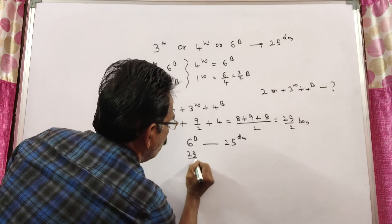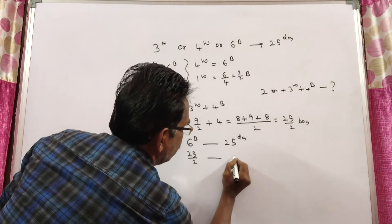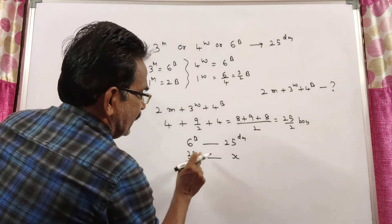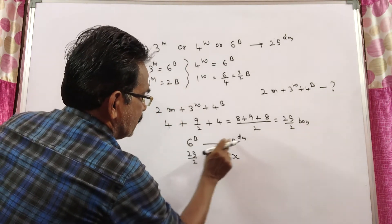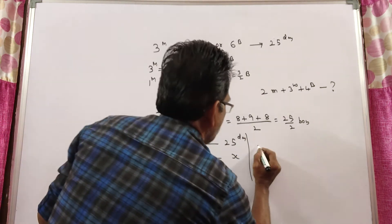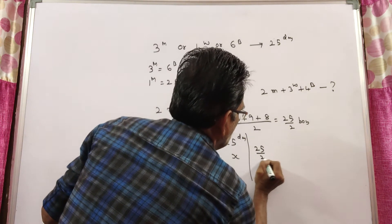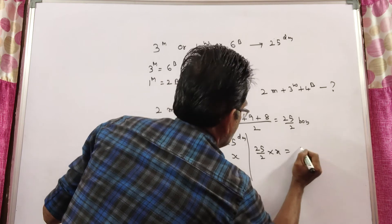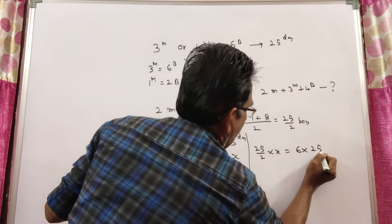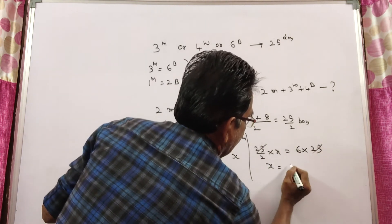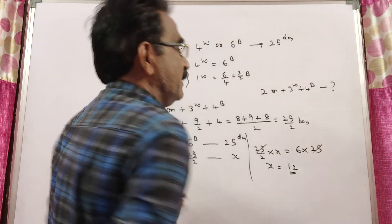25 by 2 boys can complete the work, say, x days. Then, this into this is equal to this into this. So, 25 by 2 into x is equal to 6 into 25. 25, 25 just cancelled, x is equal to 12 days.